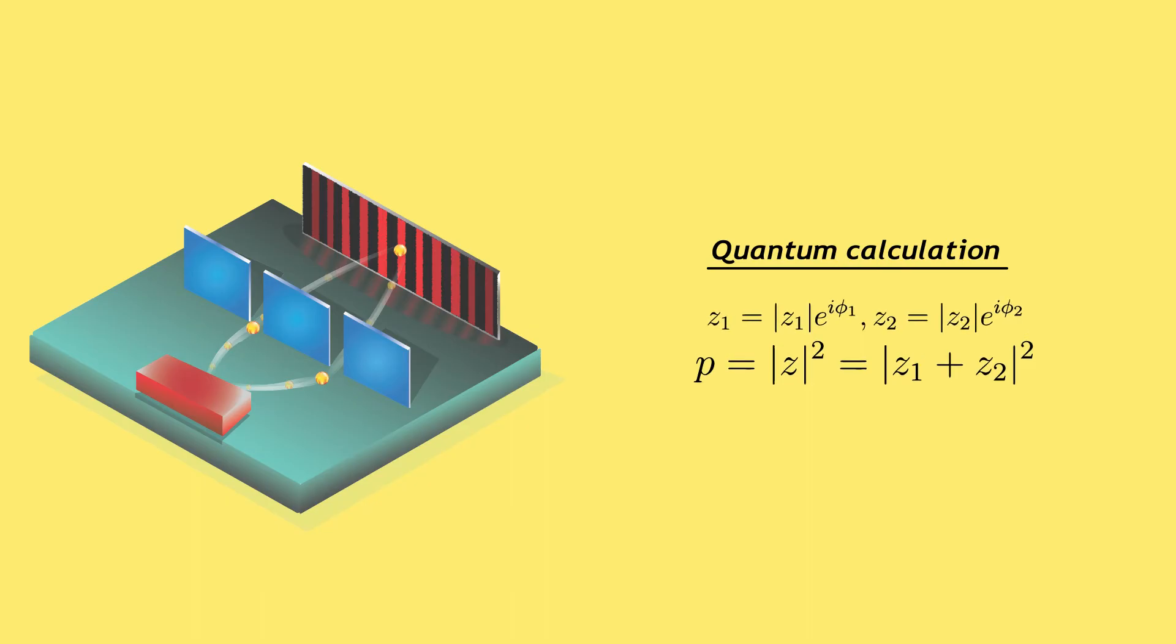If we express these amplitudes in polar form, in addition to the result for the classical term, we also get an extra term called the interference term.